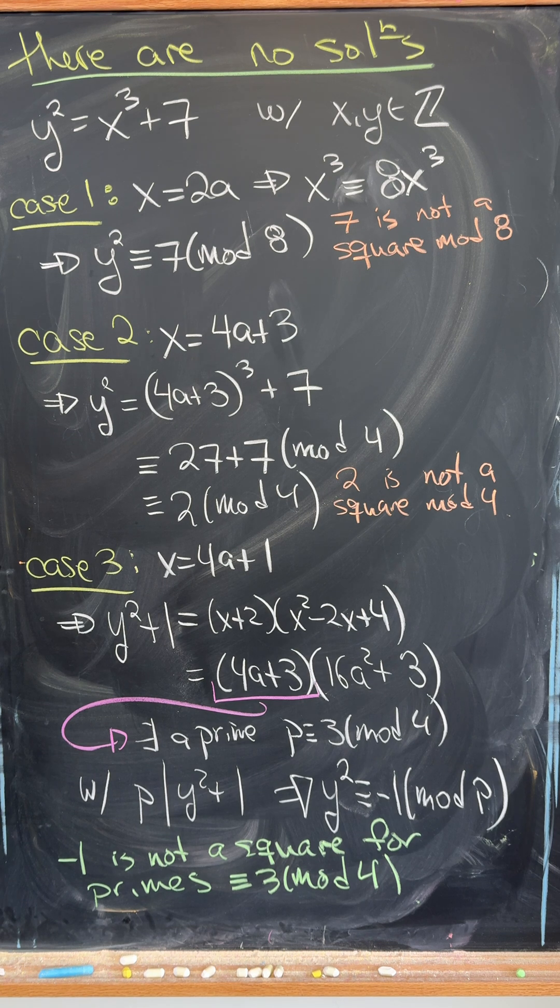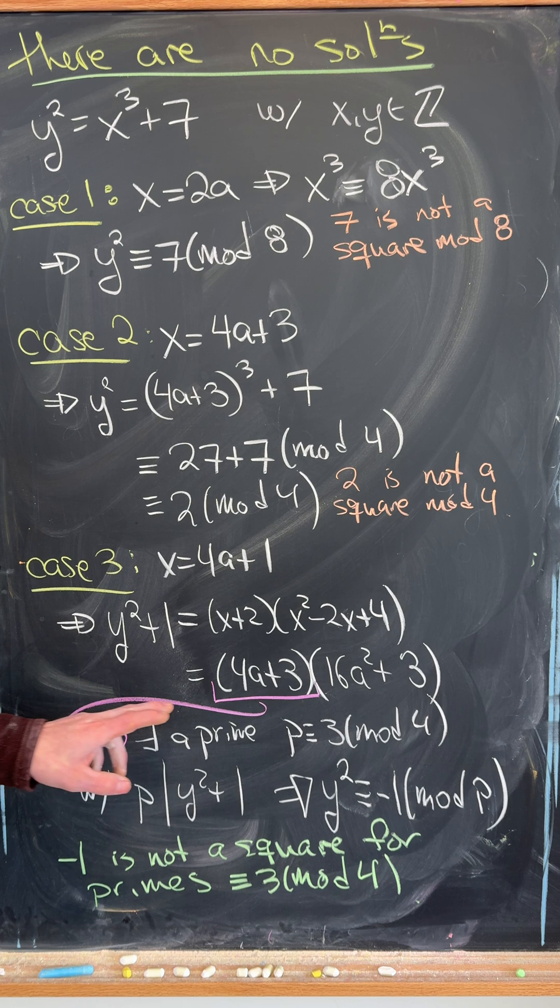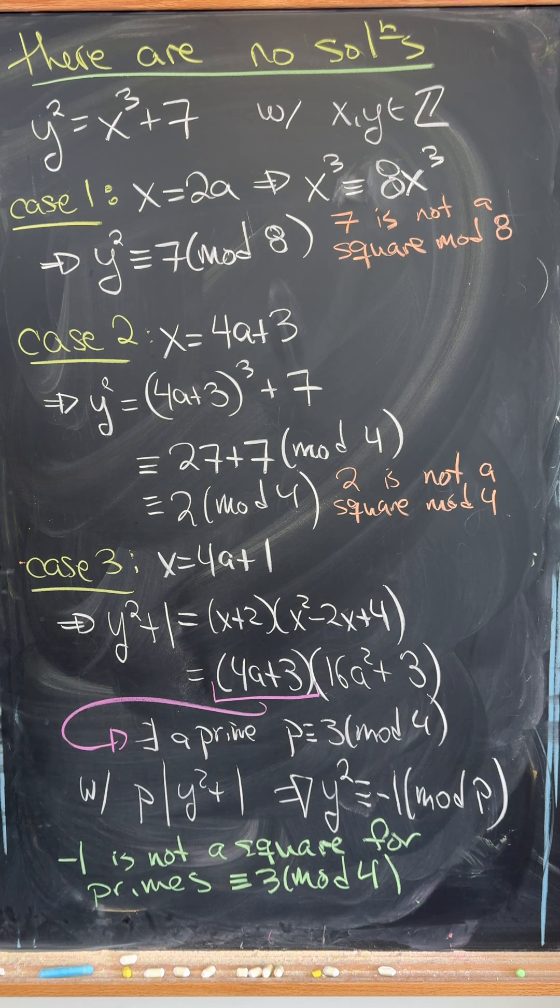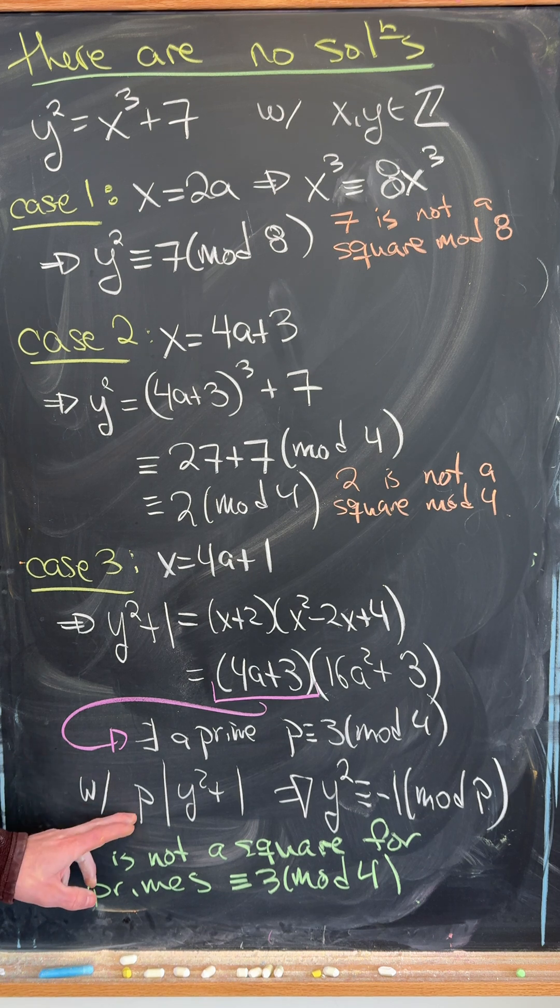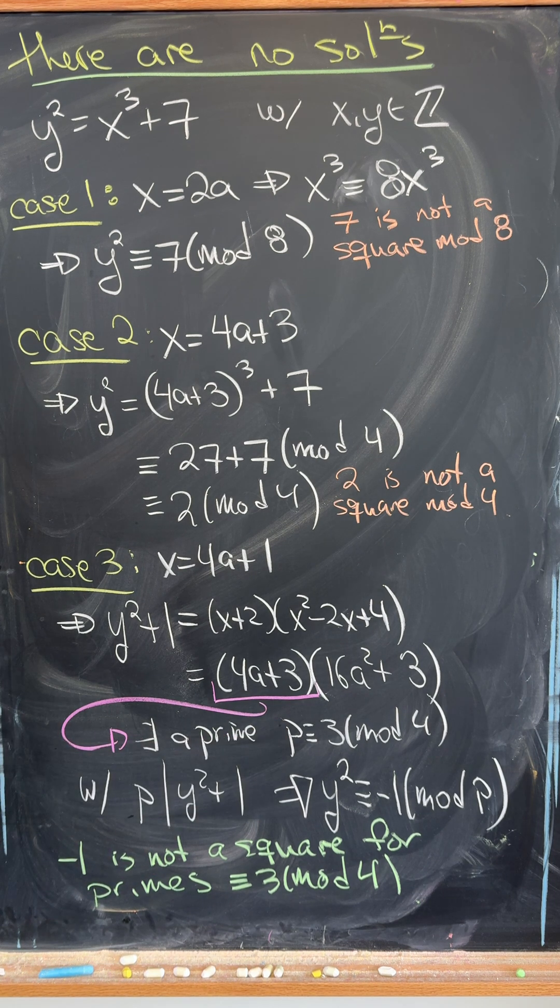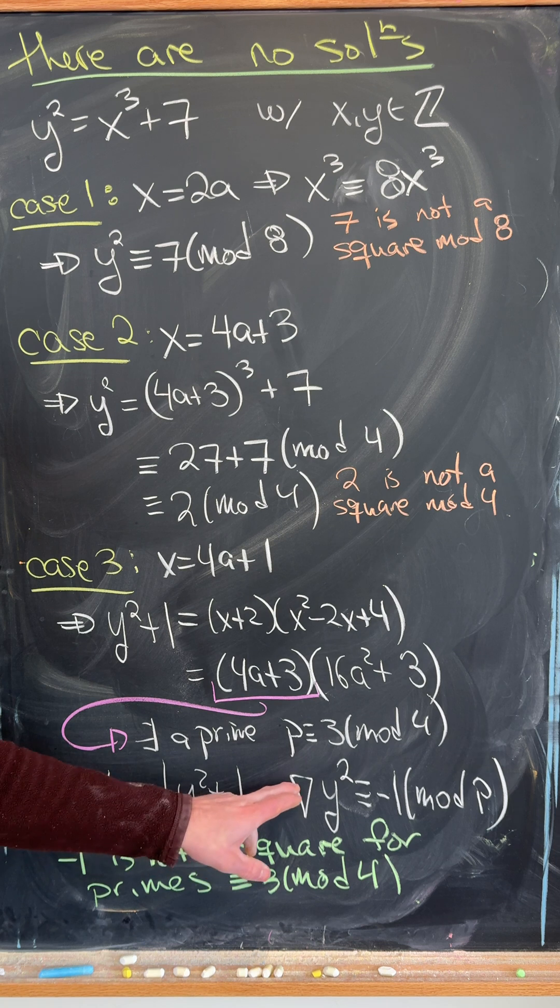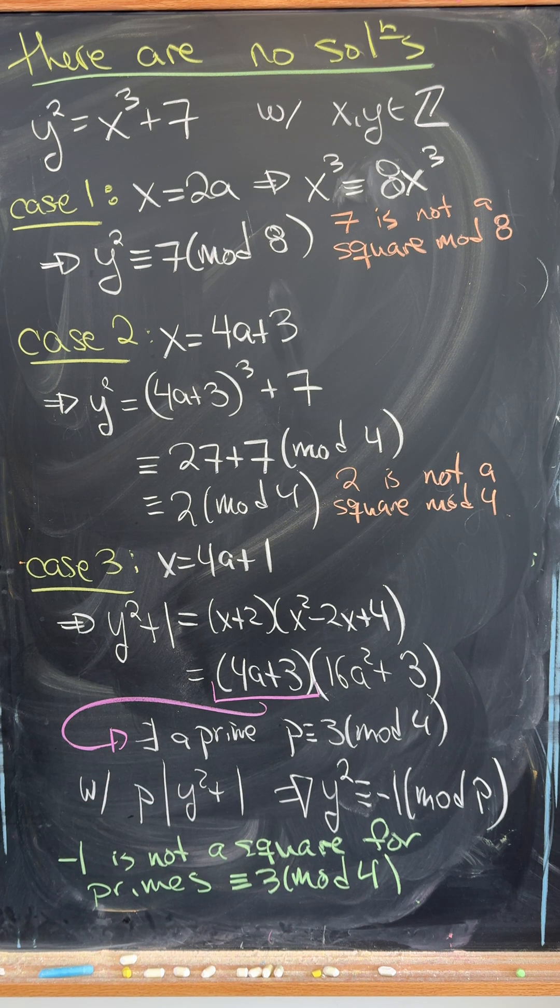Next, if x is an odd number of the form 4a plus 1, you can rewrite y squared plus 1 as a multiple of a number of the form 4a plus 3. But that means that it's divisible by a prime that's congruent to 3 mod 4. But that means that y squared is congruent to negative 1 mod p. But negative 1 is not a square for primes of the form 3 mod 4, so we don't get a solution there either.